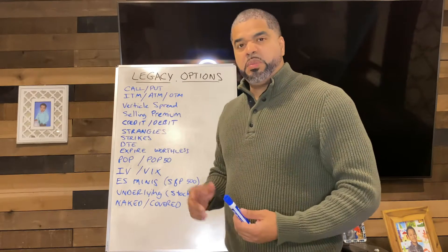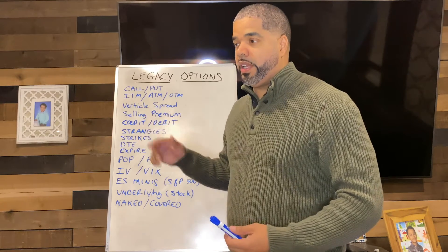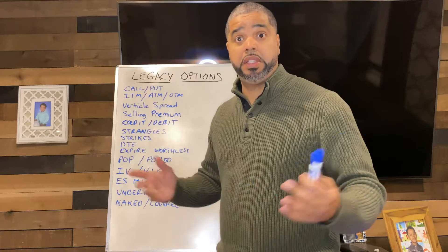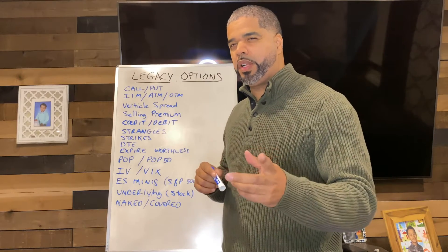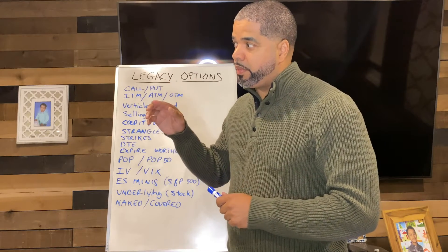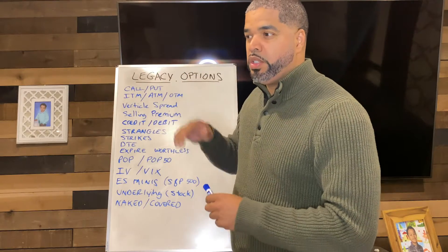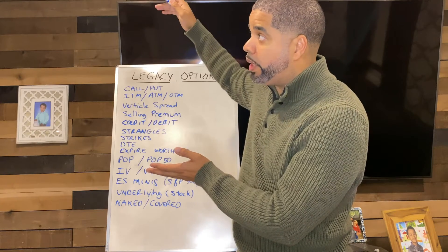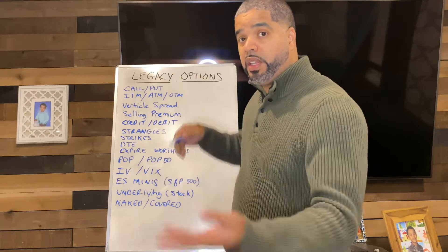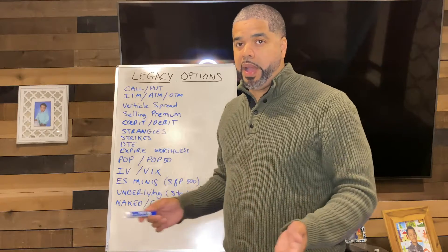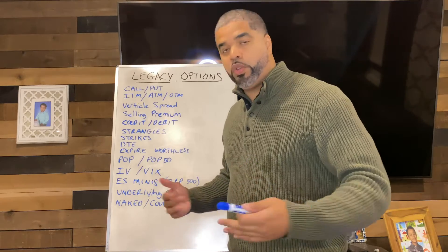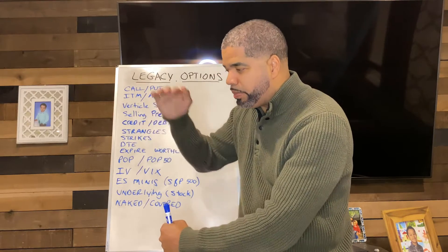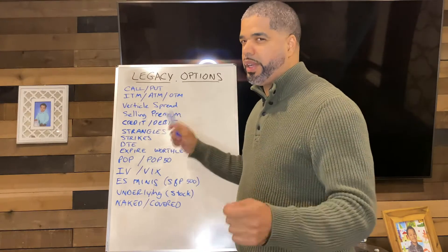Strangles — some stocks trade in a range and stay between certain numbers. Bonds, for example, don't move very violently. The TLT, which I usually trade, is staying right now between 136 and 140. So if you sell a call at 142 and sell a put at 134 — say you get $2 for each — that's a $4 credit in your pocket. If in 30 days neither side is breached, you keep the four bucks. You're essentially strangling the stock, saying it's not going to move from this boundary.